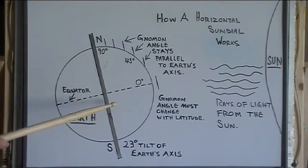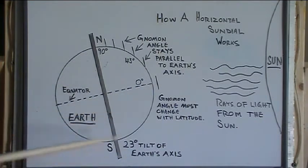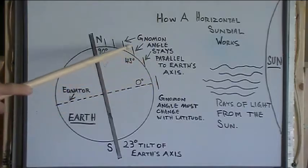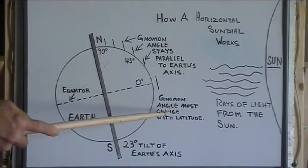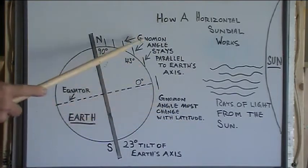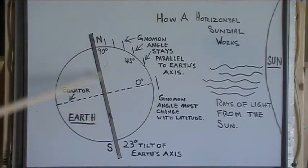And if we were to make a sundial at the equator, the gnomon, represented by these lines, would be parallel to the earth's axis because the gnomon angle has to change with latitude. It stays parallel to the earth's axis.